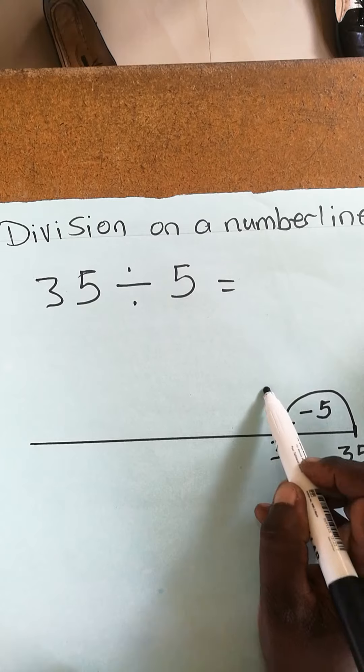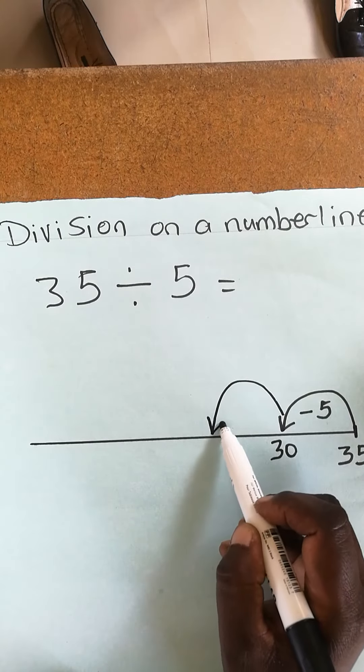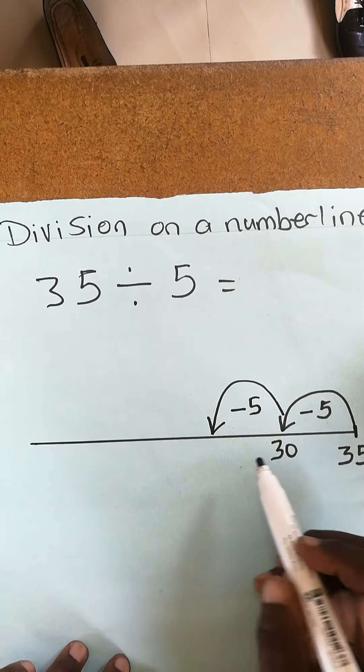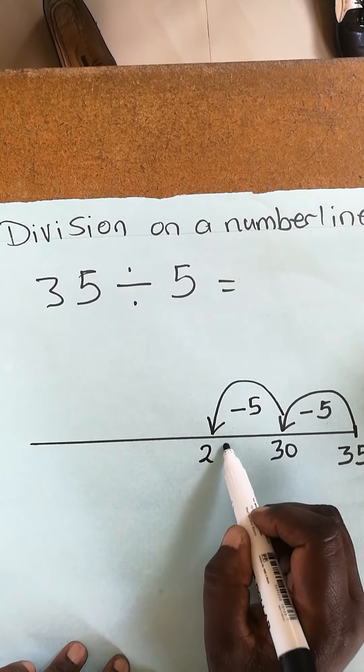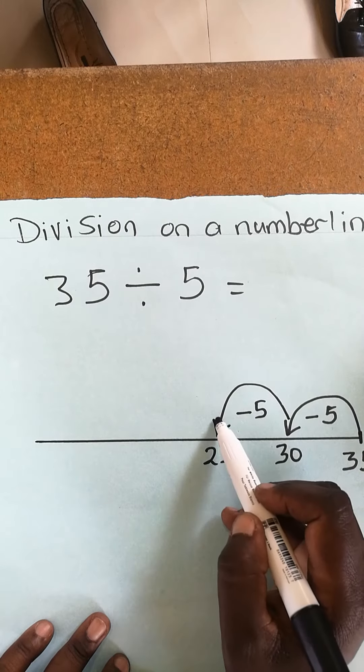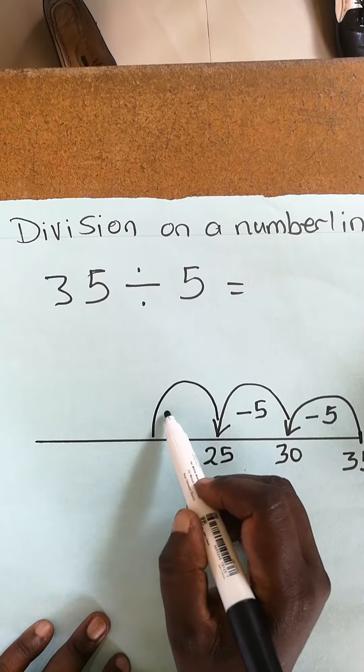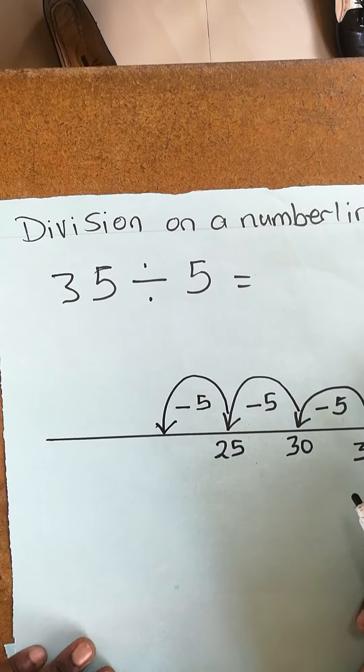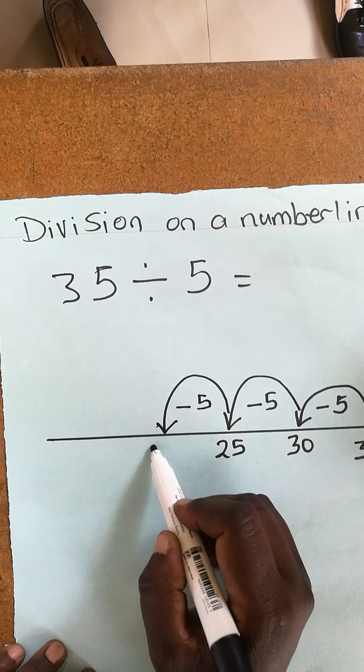Take away 5 counting backwards in fives. Take away 5 again, it is going to be 25. This journey is still on. Take away 5 again. Every time you're taking away 5, counting backwards in fives, it's going to be 20.